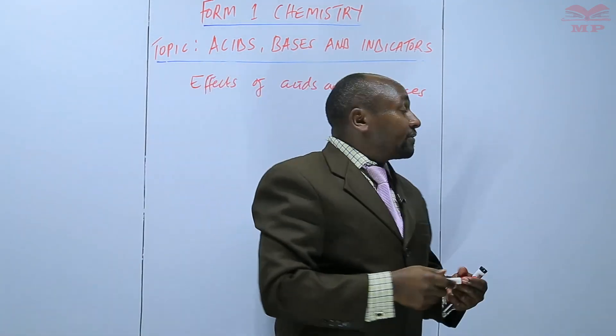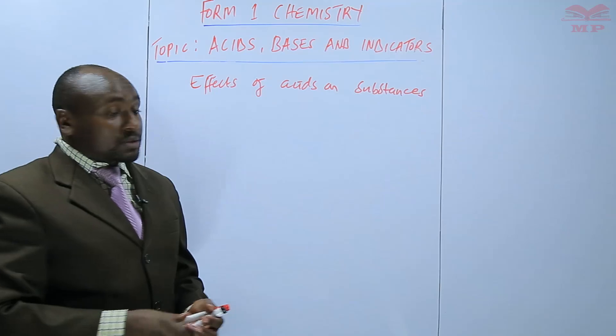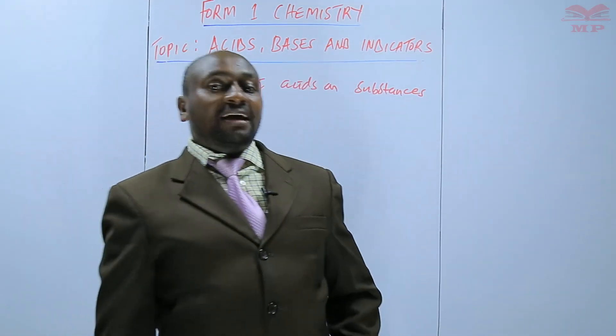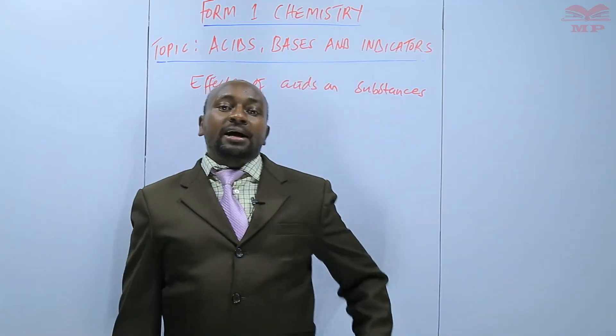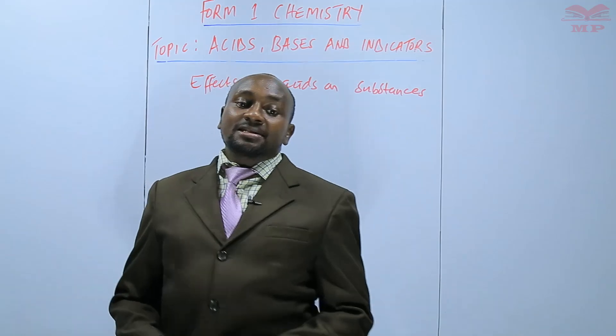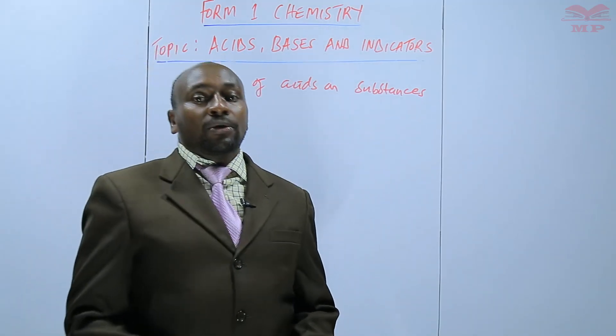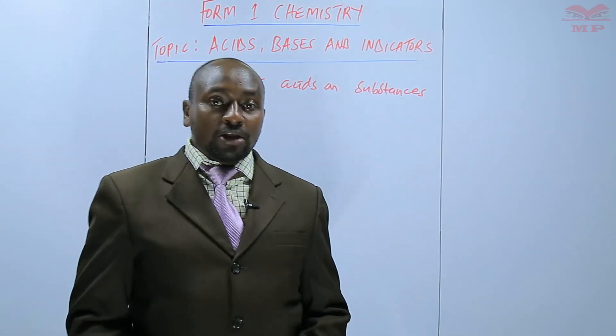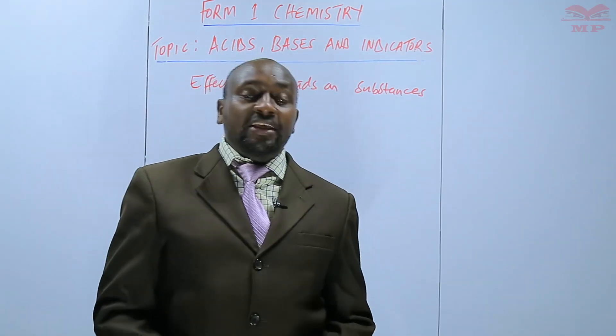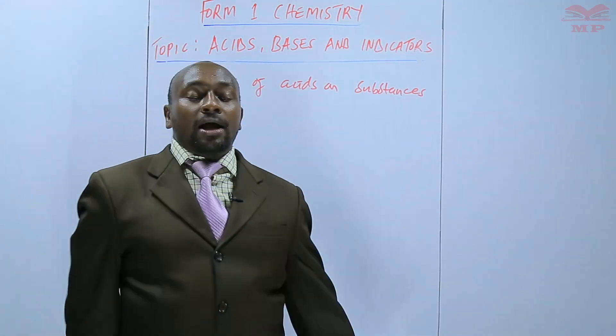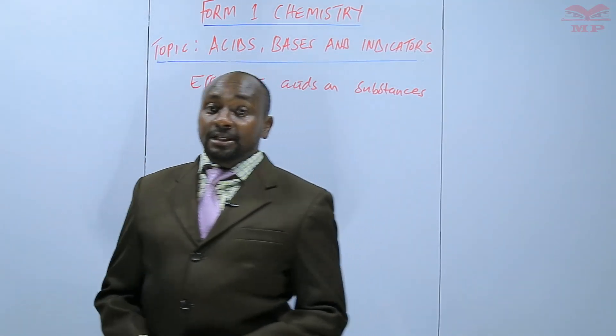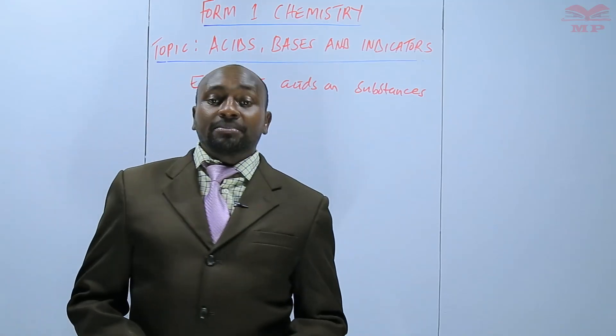When you talk of the effects of acids on substances, we have some gases that are acidic that are emitted by industrial processes. We have gases such as sulfur dioxide, nitrogen IV oxide. Those gases are acidic and when they are released into the atmosphere, they have an effect. Those gases have an effect and that effect is sometimes negative.